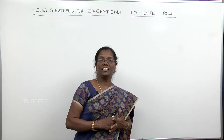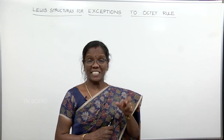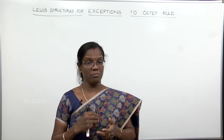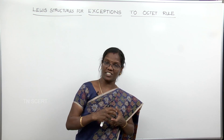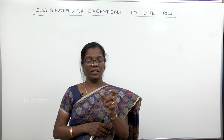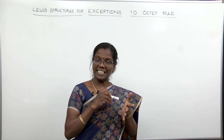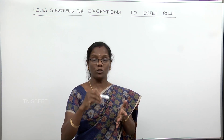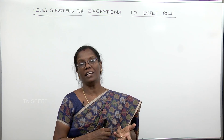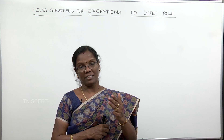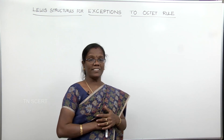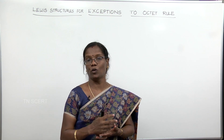We are going to see the Lewis structures which stand as exceptions to the octet rule. The octet rule says that around each atom in a Lewis structure there should be 8 electrons, either in terms of bonds or lone pairs of electrons — pairs of electrons not involved in bonding. Not all Lewis structures follow the octet rule.